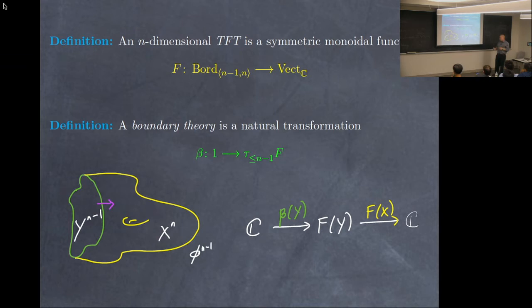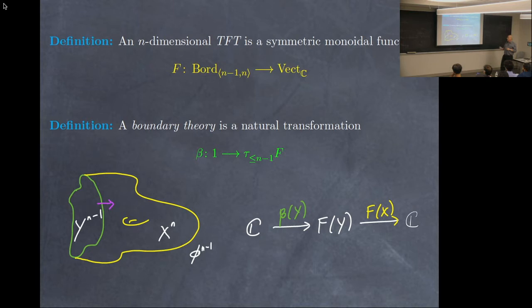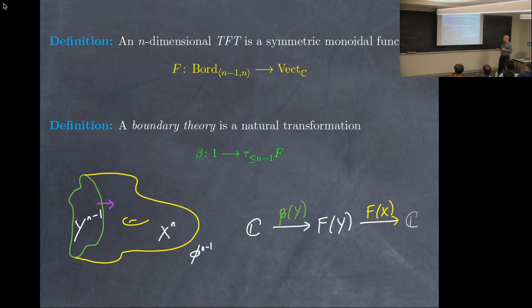If I evaluate this on a manifold X with boundary — viewing the boundary as incoming — and I paint, so to speak in green, the boundary theory on this boundary: if we evaluated this without the boundary theory in the bulk theory, we would get a linear map from the vector space of states of the boundary to the complex numbers, a functional — a generalized correlation function. But with the boundary theory, what it gives us is a particular vector in this vector space. So when we compose, we get a number, as if we started with a closed manifold. A boundary theory essentially closes off the boundary.